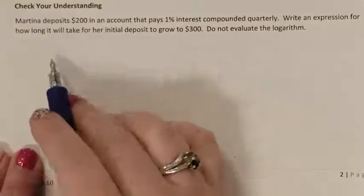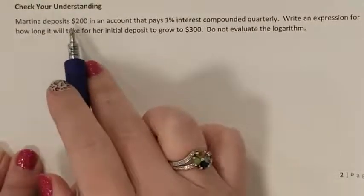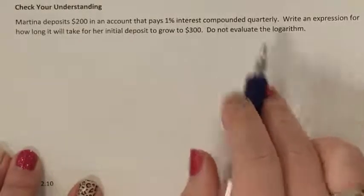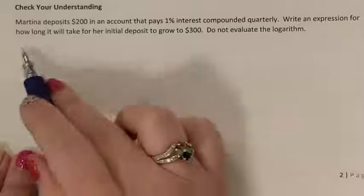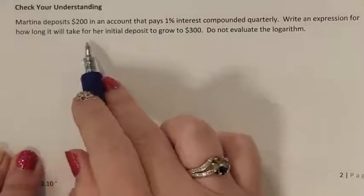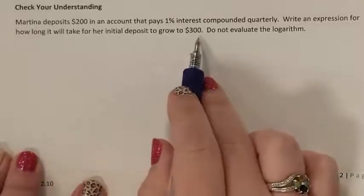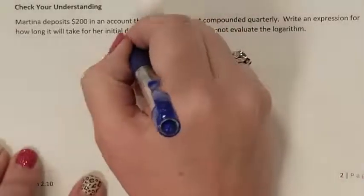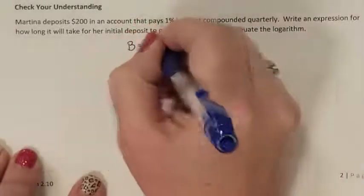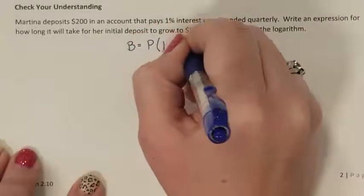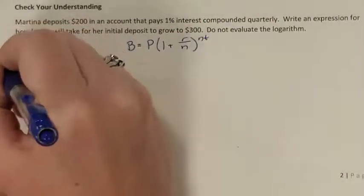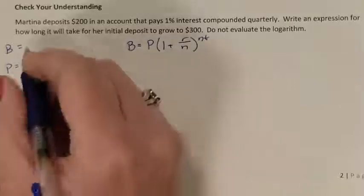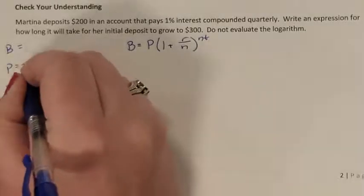Now let's check your understanding. Martha deposits $200 into an account that pays 1% interest compounded quarterly. Write an expression for how long it will take for the initial deposit to grow to $300 — do not evaluate the logarithm. Here is our compound interest formula where I need to know B, P, R, N, and T. We know she deposits $200, so P is 200.